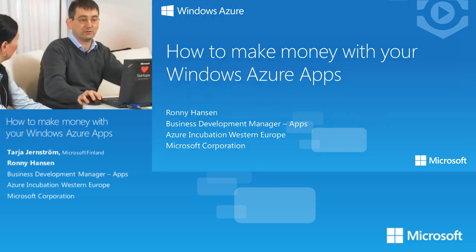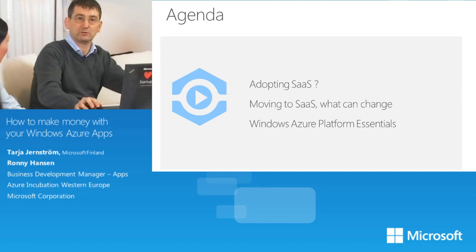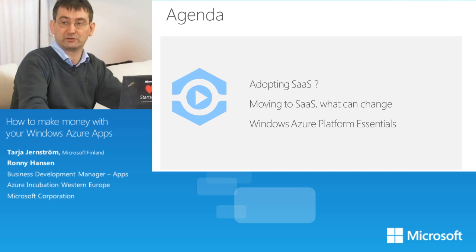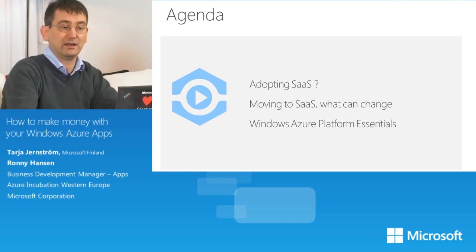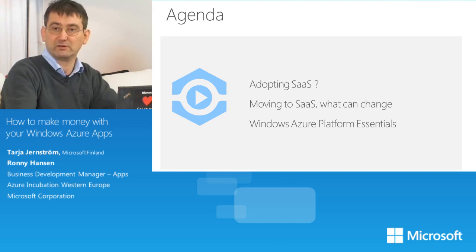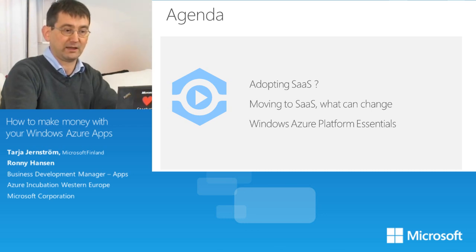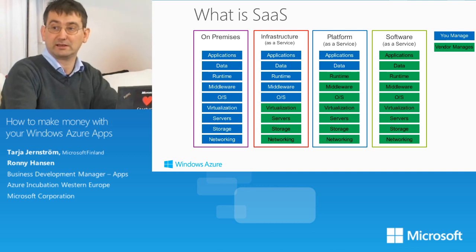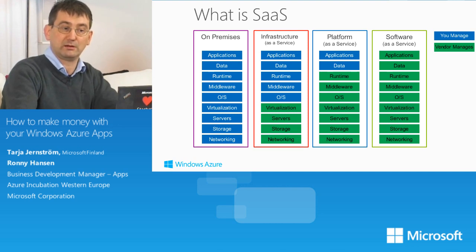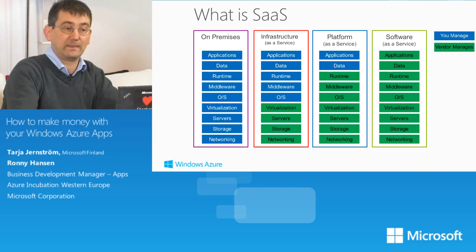In this presentation, I'm going to talk about how to evaluate if you are going to adopt software as a service. If you are moving to software as a service, what can possibly change? This is business related, not technical. And then we're going to go into the Windows Azure platform essentials, doing a high-level presentation of the most important stuff in Windows Azure that you as an ISV need to evaluate.